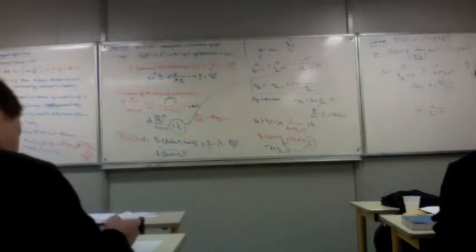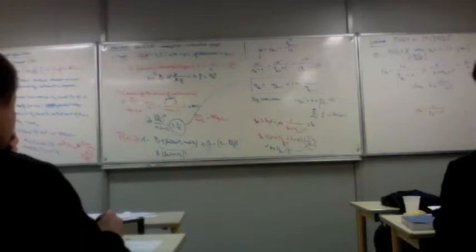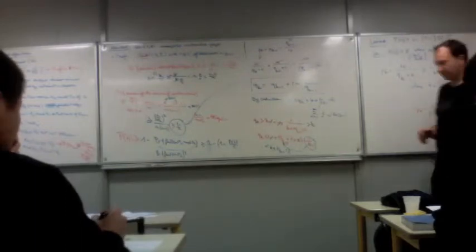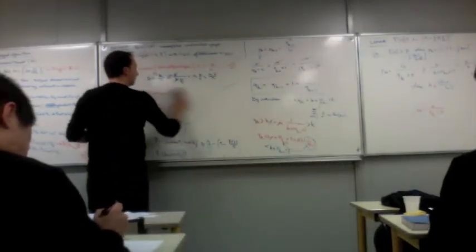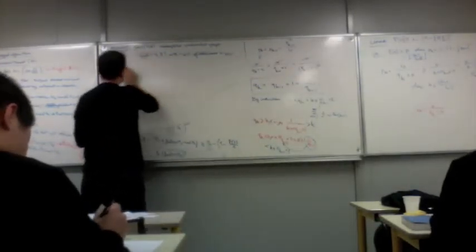So now what do I need to do to have the probability of success 1 minus theta of 1 over n squared, for instance? What do I want? What do I do? So we will write the theorem first and then we will answer this question.